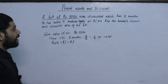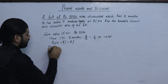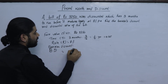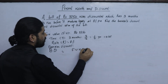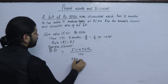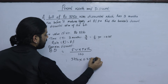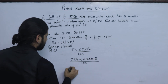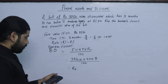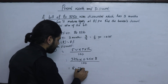Find the banker's discount (BD). The banker's discount is calculated as: BD = Face Value × Rate × Time = Rs.3,750 × 0.08 × 0.25 = Rs.75. So the banker's discount is Rs.75.